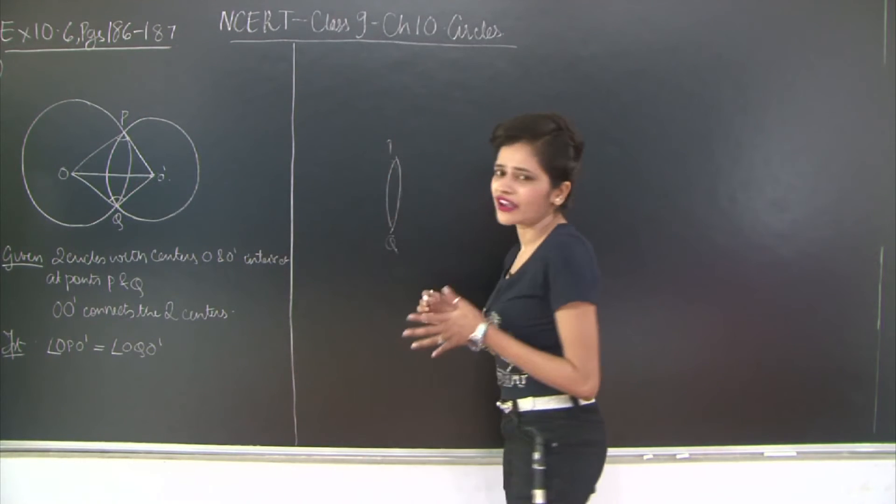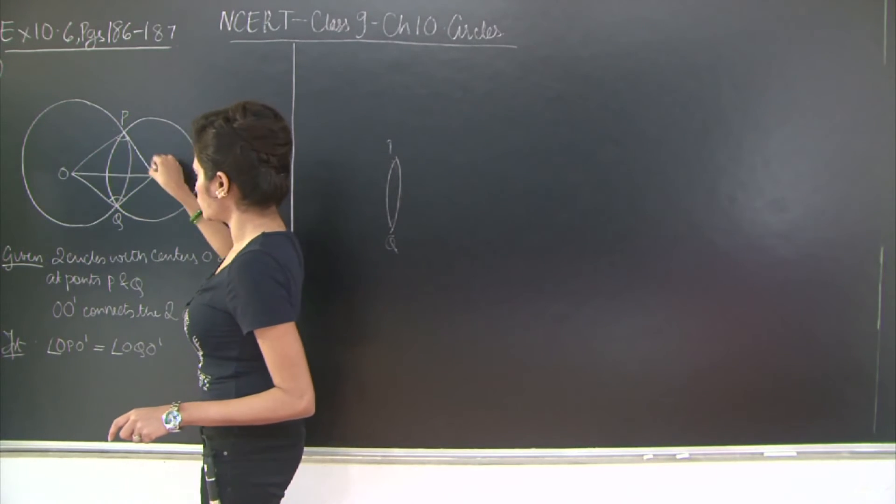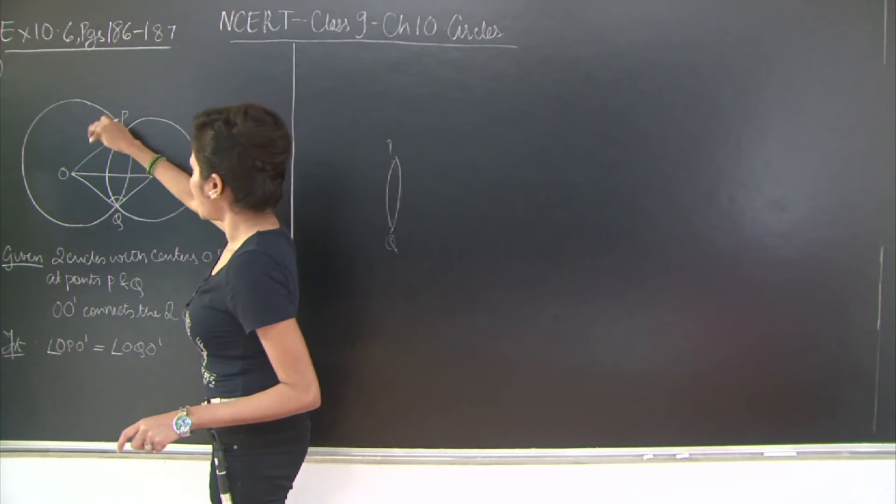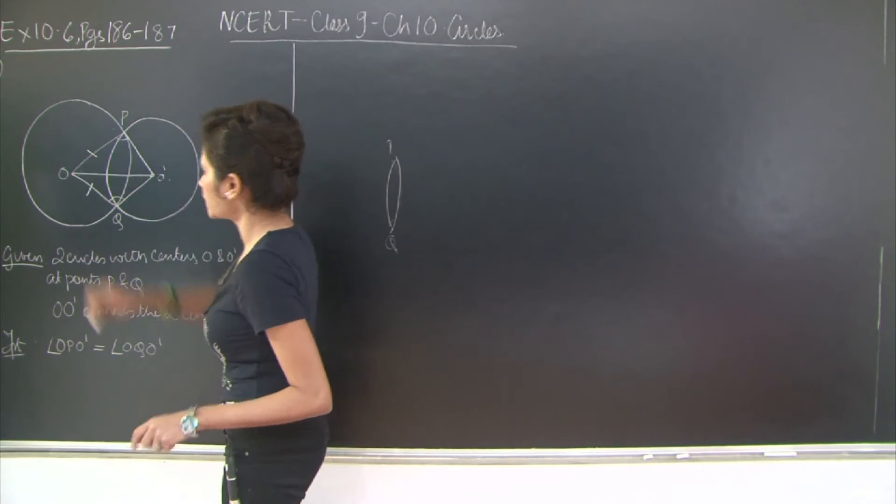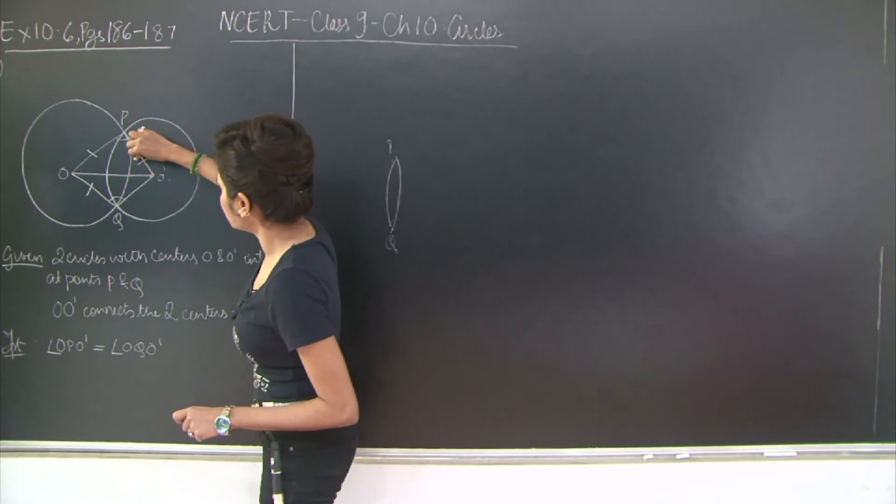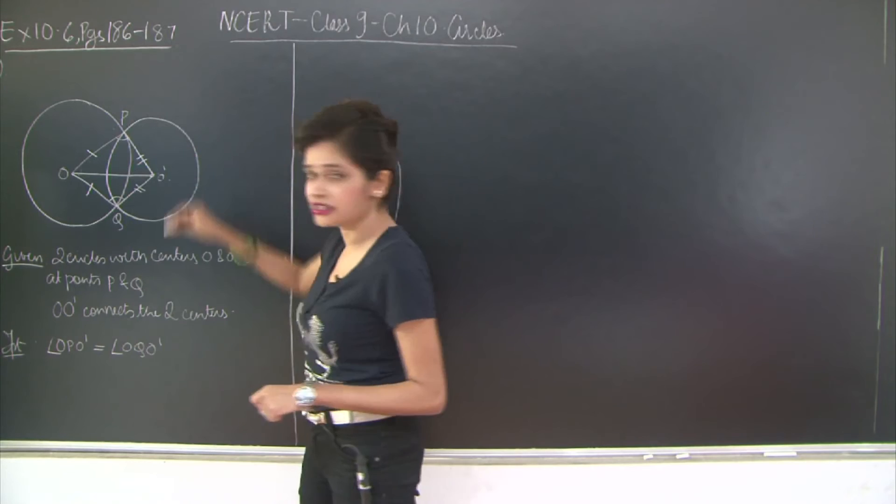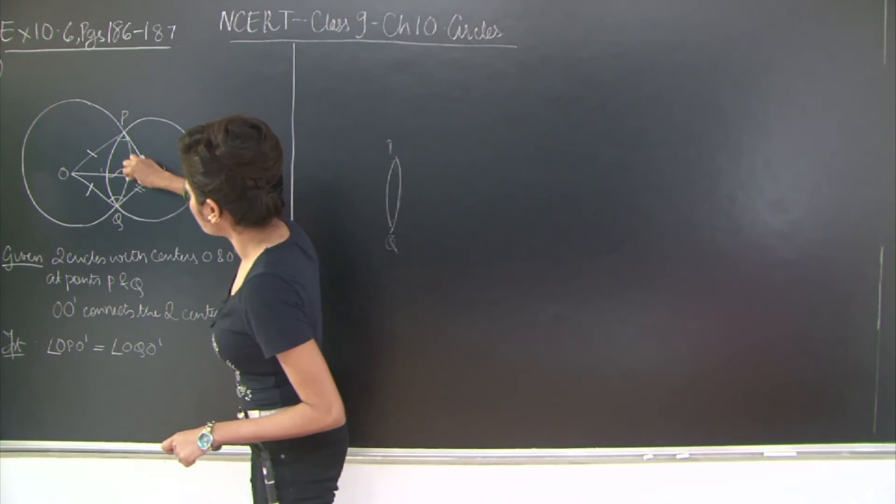So this is very simple if you see in the two triangles O, P, O' and O, Q, O' I have this side equal to this side because they are the radii of the same circle. Again this side is equal to this side because they are the radii of the small circle and this side is common right.